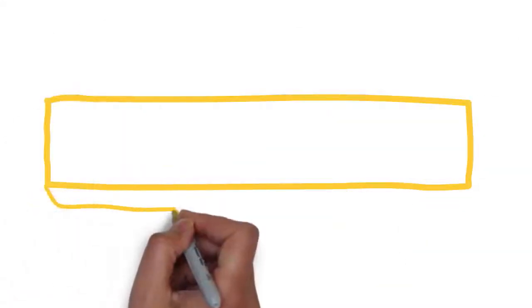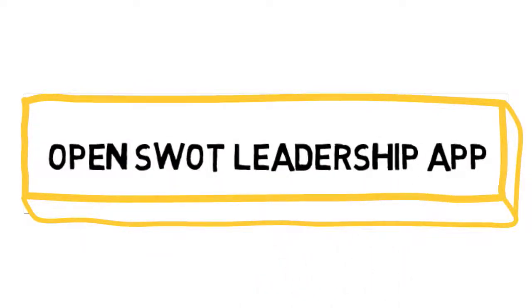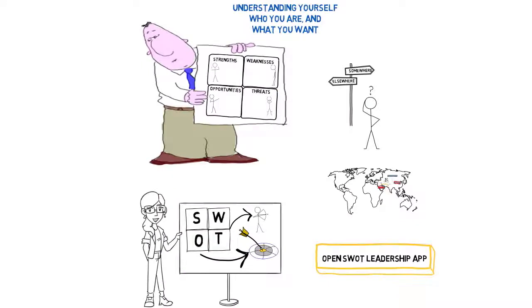open the SWOT Leadership app and begin by asking yourself a series of questions, answering them in the appropriate page. When you have completed your thinking for a particular section, just go to the next area.